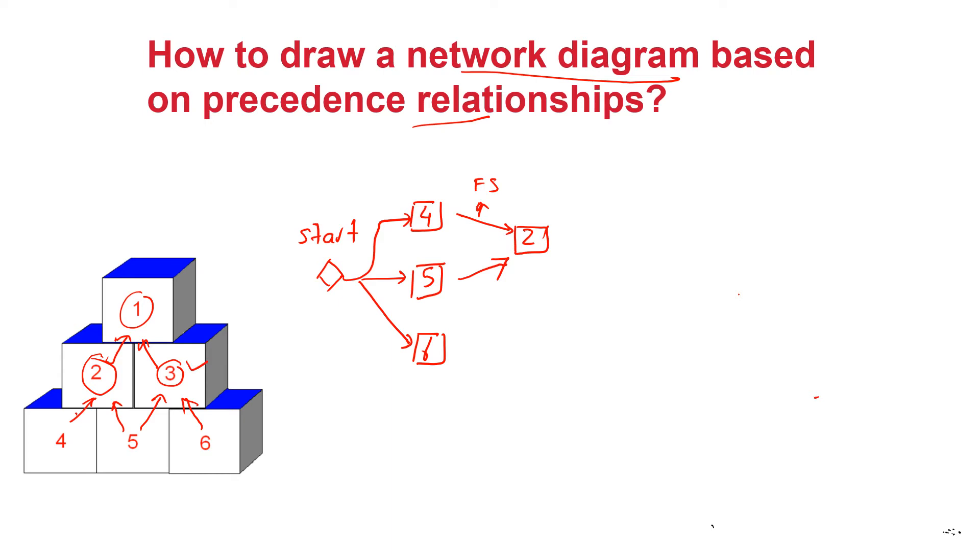And likewise if you look at the block 3 it can only be put in its place only once block 5 and block 6 have been completed, and the last activity here is the laying of block 1 which is the last activity. So this is a very simple example of how we transfer a logic relationship indicating various predecessor relationships into a logic diagram.